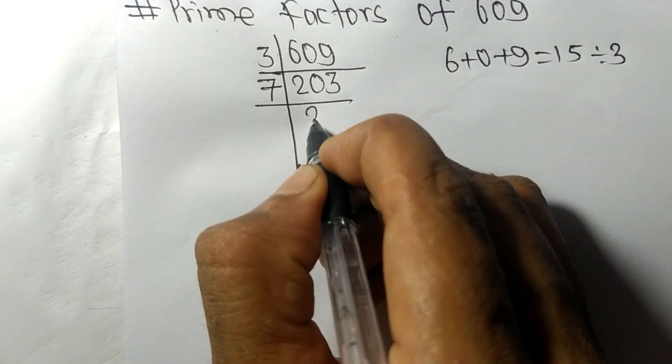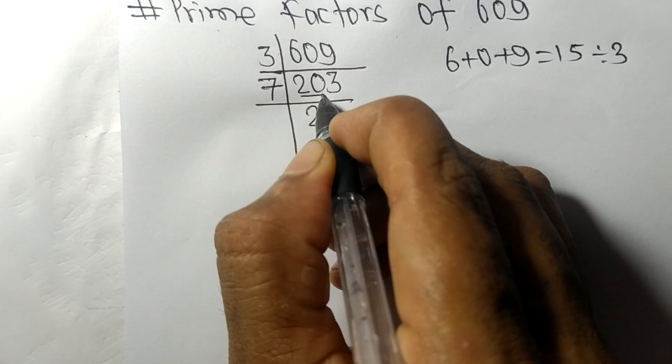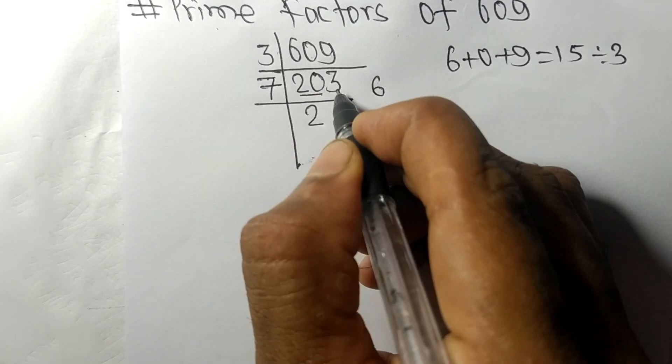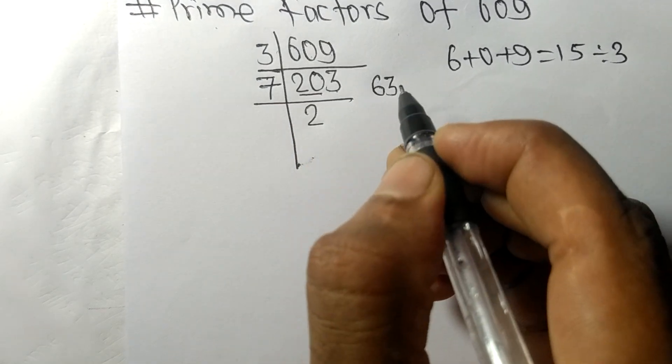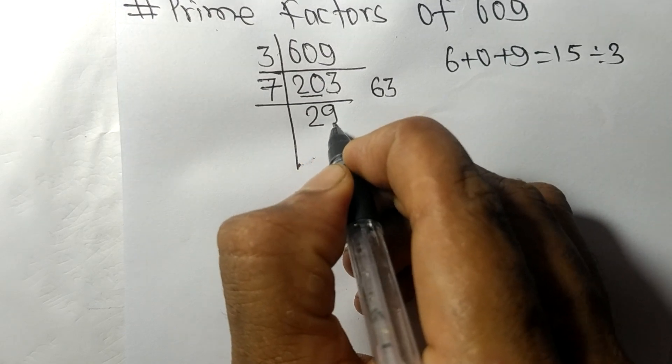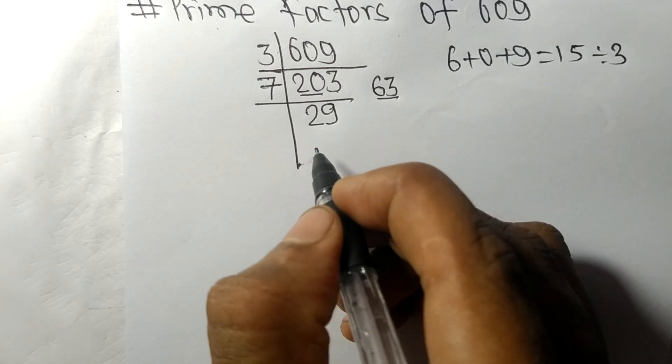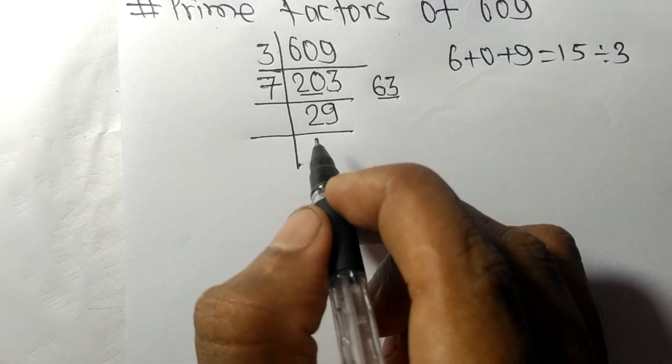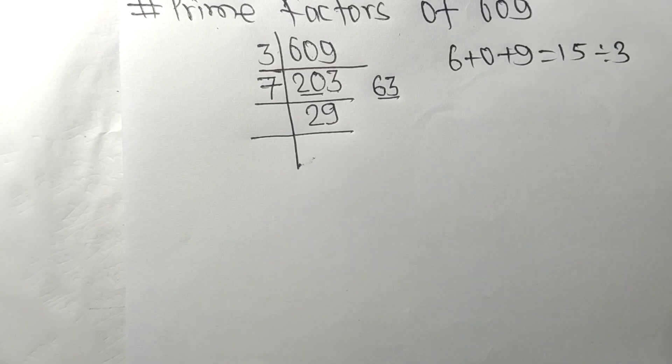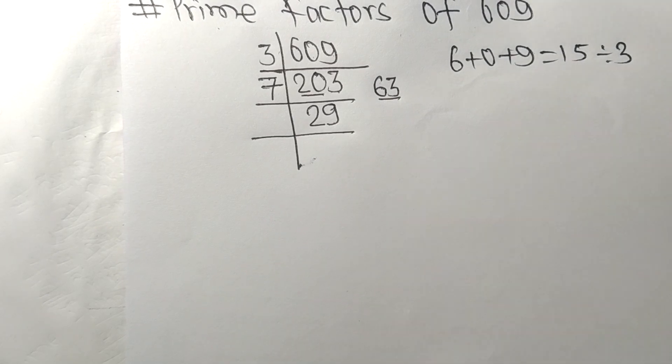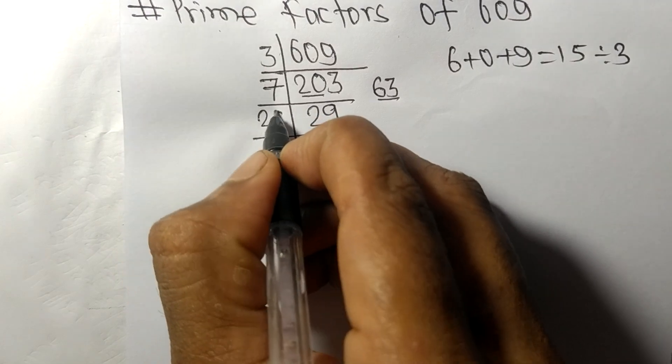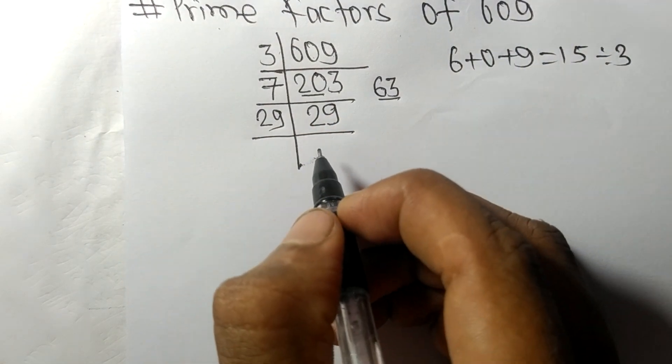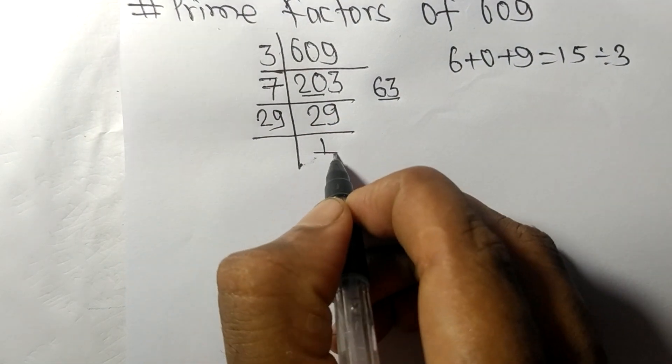7 times 2 means 14, remainder 6, and this 3, 63. 7 times 9 means 63. Now we got here 29, which is a prime number, so it is divisible by 29 itself, and we get here 1.